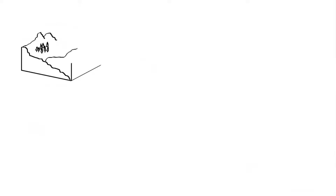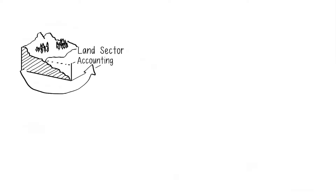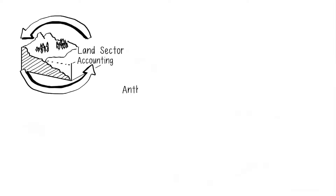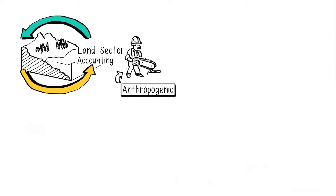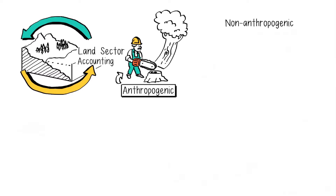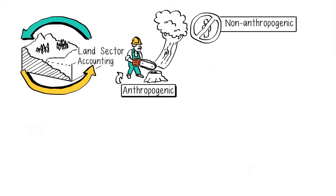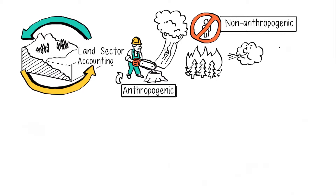One reason accounting for the land sector is treated separately is because the sector can have significant fluxes of emissions and removals with origins that are either anthropogenic — man-made, such as deforestation — as well as non-anthropogenic, or non-man-made. Non-anthropogenic fluxes include natural disturbances such as wildfires, windstorms, hurricanes, and landslides.